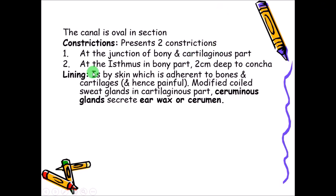There are modified coiled sweat glands within the cartilaginous part called ceruminous glands, which secrete earwax or cerumen. This wax will be automatically removed in normal circumstances.